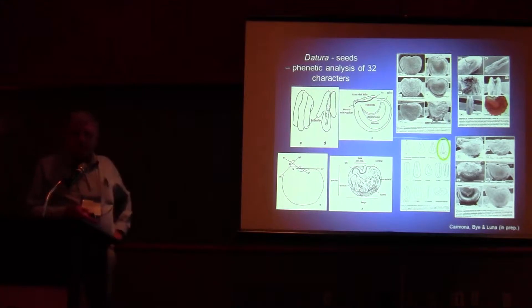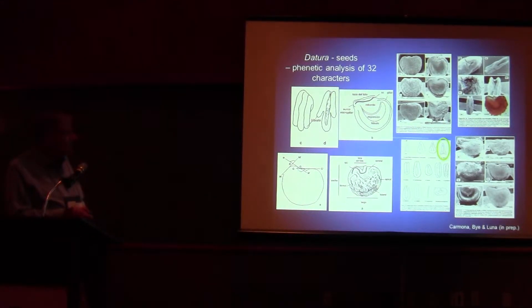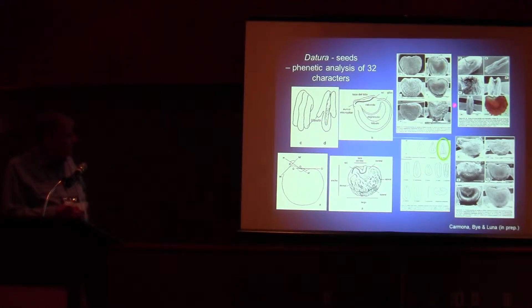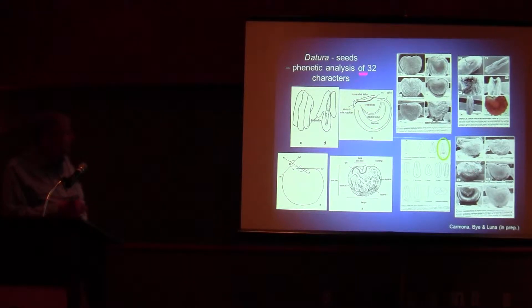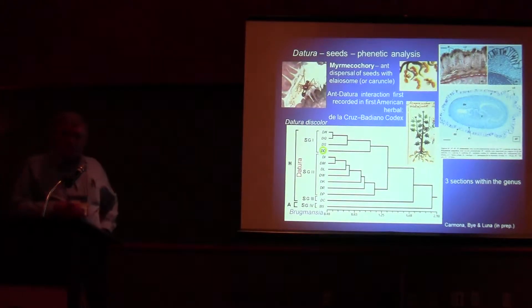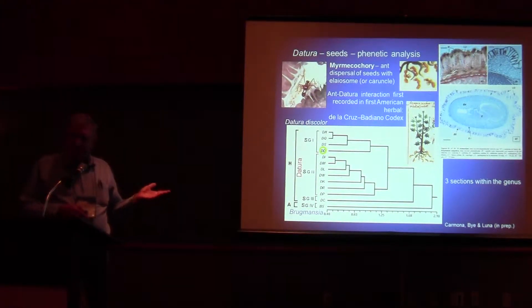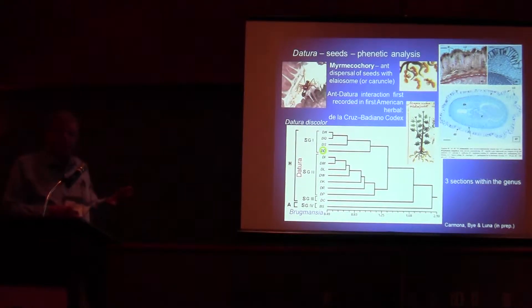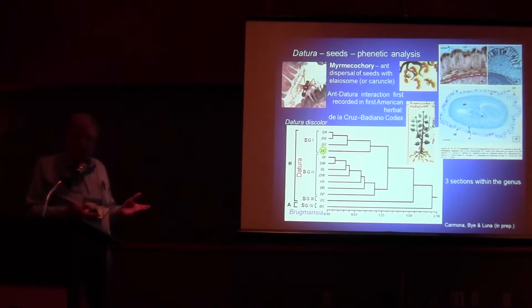Taking a look at seed characters, we find we're using about 42 different kinds of characters as well as anatomical features to differentiate them. In particular, we use 32 characters for analysis of the seeds, and essentially what we find are three sections, going back to the old Bernhardt classification. So the external morphological characters give us four sections, and the seeds give us three.